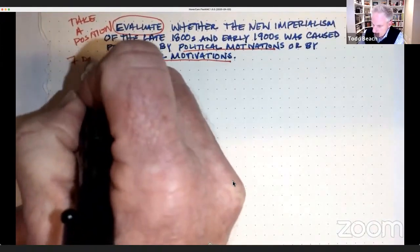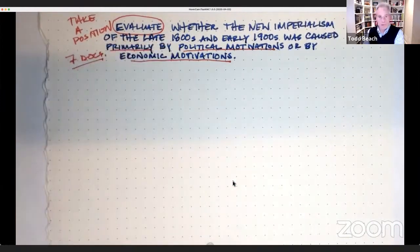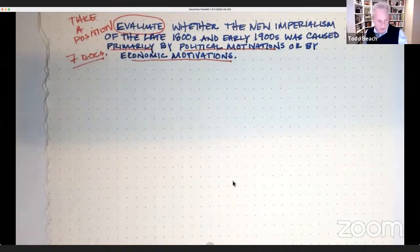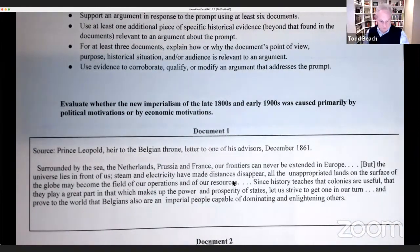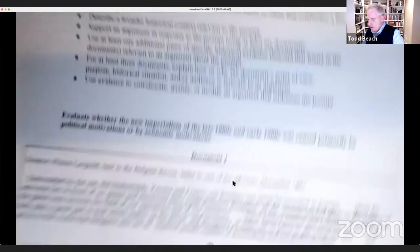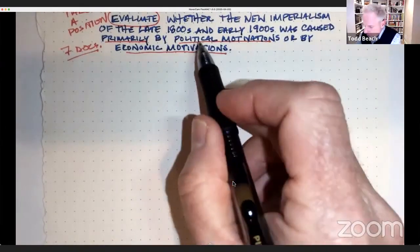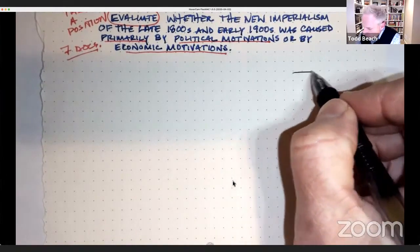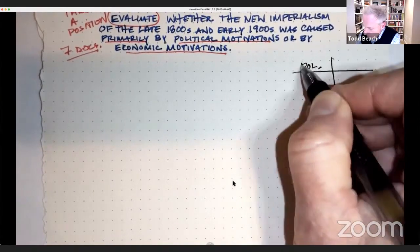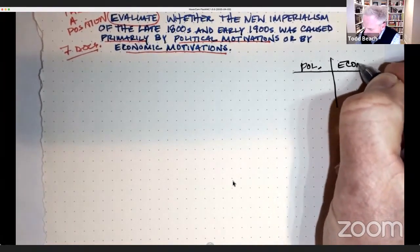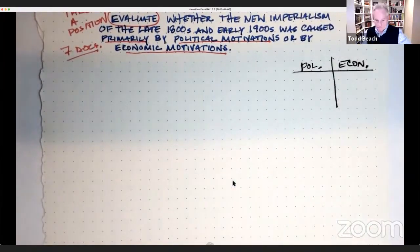And so there will be seven documents, and one of those documents will be an image. So you need to quickly read through the documents. One of the suggestions I have for you is to make a T-chart. Because we're doing either political motivations or economic motivations, make a T-chart over on the side of the documents, and one side will be political, and one side will be economic.